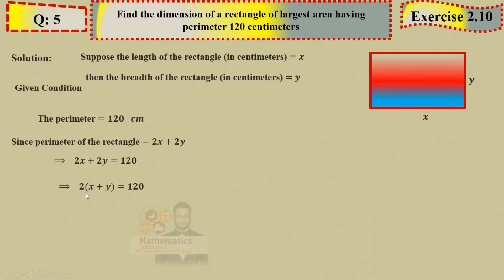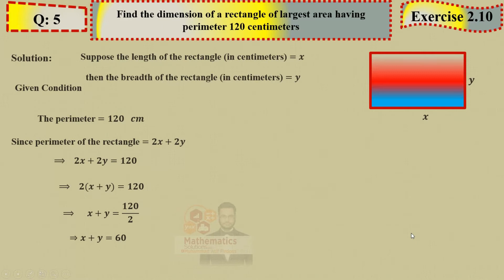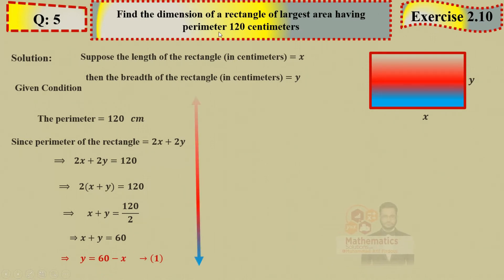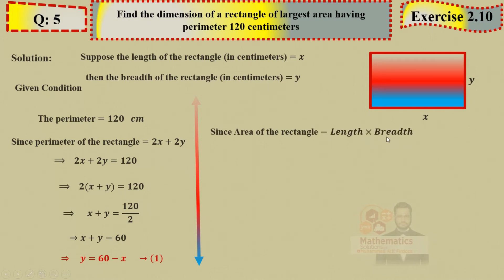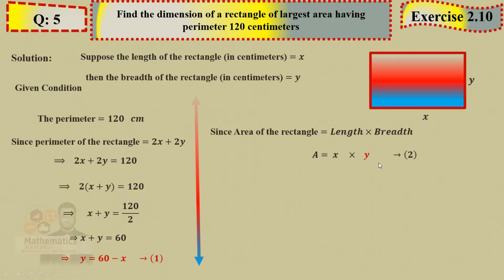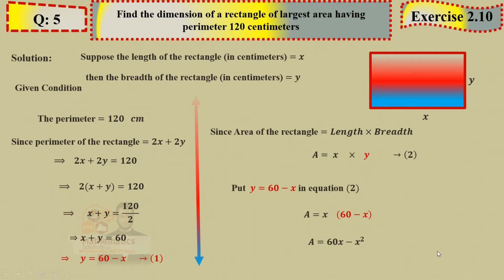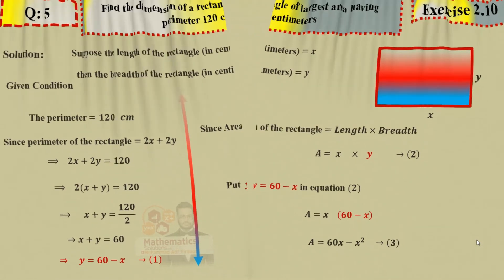Area of rectangle = length × width = x × y. Substituting y = 60 − x: A = x(60 − x) = 60x − x². We need to maximize this (largest area). Apply second derivative test. First derivative: dA/dx = 60 − 2x. Second derivative: d²A/dx² = −2.